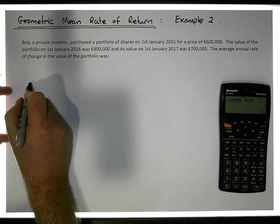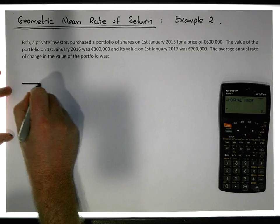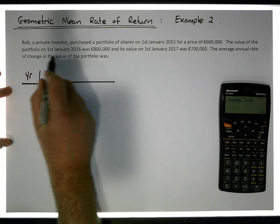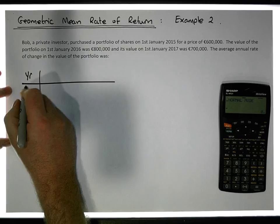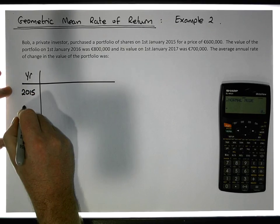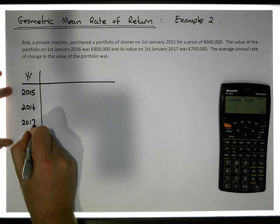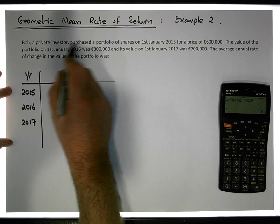So what should we do in this case? Let's keep track of the year. Let's create a table. So we have our year: January 2015, January 2016, and January 2017.